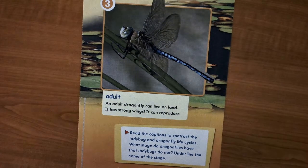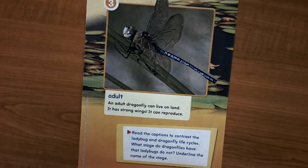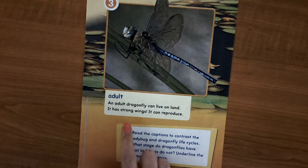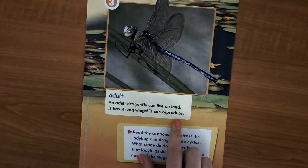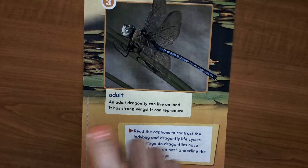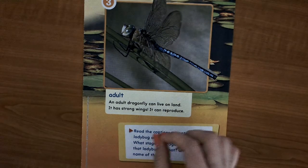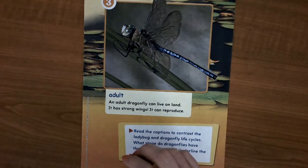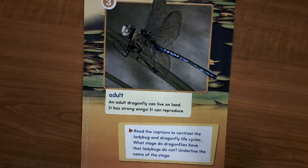The last stage is the adult. Right here, this is an adult dragonfly, and they can live on land. It has strong wings and it can reproduce and start the life cycle over — by laying the eggs, the eggs turning into a nymph, and then becoming an adult dragonfly.